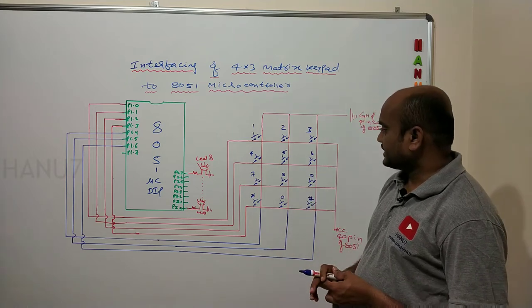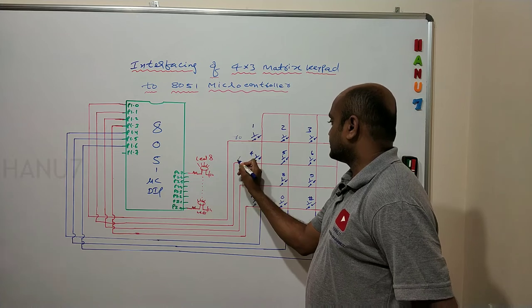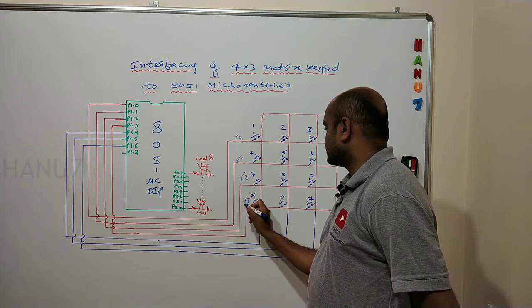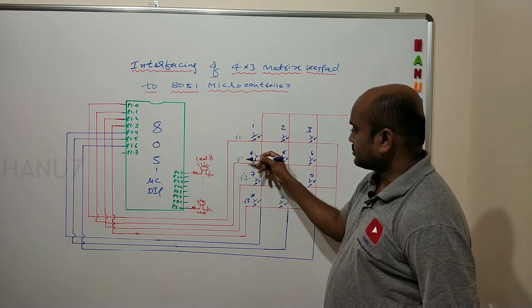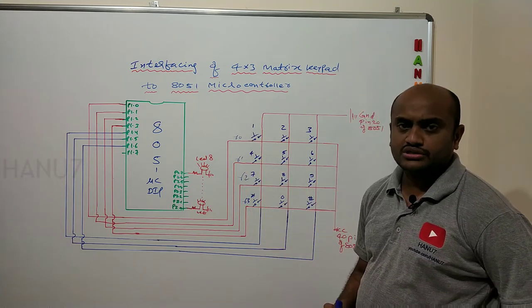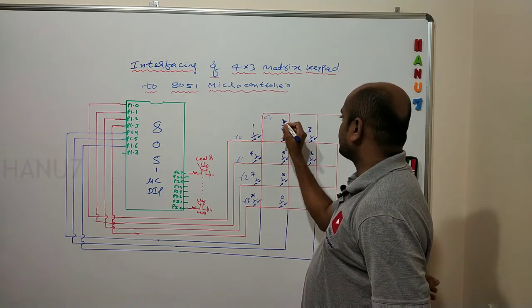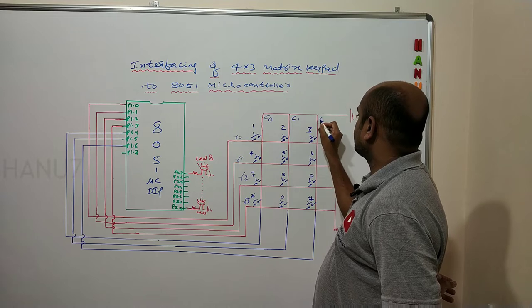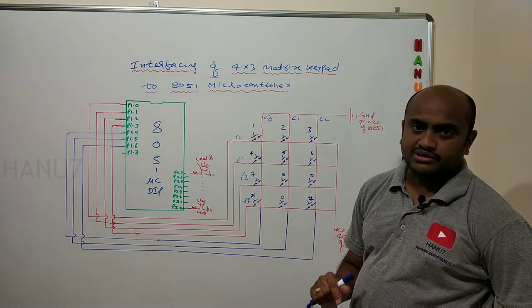This 4 by 3 matrix keypad has 4 rows: row 0, row 1, row 2, and row 3. You can give any name like R1, R2, R3, R4, but I used R0, R1, R2, R3. There are 4 rows and 3 columns: C0, C1, and C2.